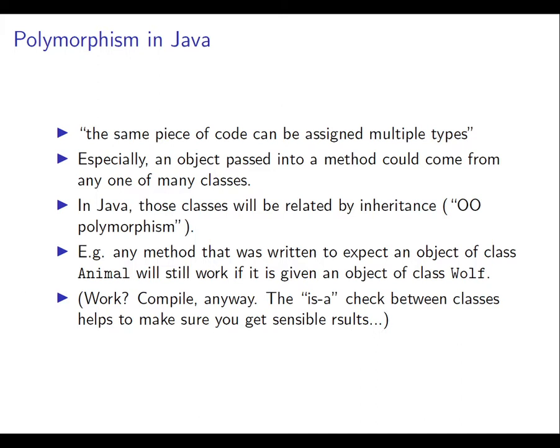Polymorphism means that the same piece of code can be assigned multiple types. In our case that's going to be an object reference that could end up having multiple types, so an object passed into a method could come from any one of many classes. In Java we have what's called object-oriented polymorphism, and what that means is that the classes that could be the type of a thing that's passed into a method will be related by inheritance. Any method that was written to expect an object of class Animal will still work if it is given an object of class Wolf, because remember the is-a relationship: any object of class Wolf is-a object of class Animal.